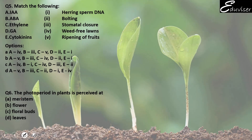Question number 5: IAA is written on one side — herring sperm DNA, bolting, stomatal closure, wheat-free lawns, or ripening of fruits. Ripening of fruits — we already read that ethylene is responsible for that. Cytokinin promotes cell division. Herring is a type of fish, and from its sperm, DNA is isolated. That DNA is sterilized by steam — essentially autoclaved — and from that autoclaved herring sperm DNA, we get kinetin.